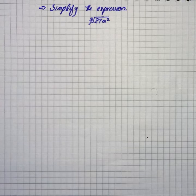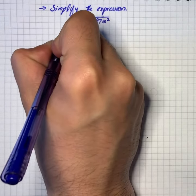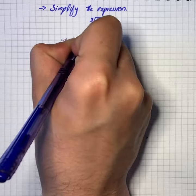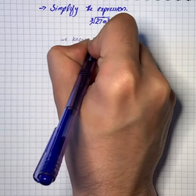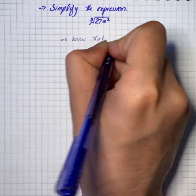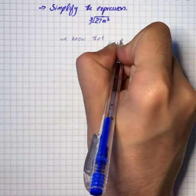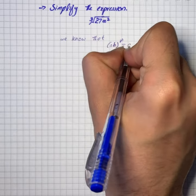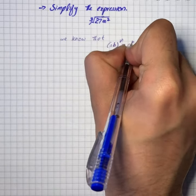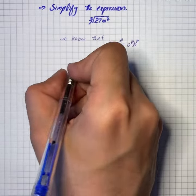Here we have to simplify the expression under root 27 m square, root power 3. We know that (ab) whole raised to power p is equal to a raised to power p and b raised to power p. We can also write it that way.